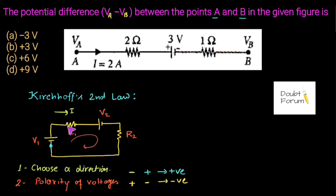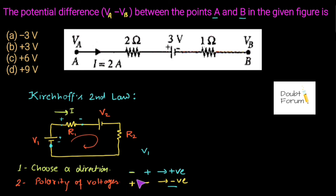Moving in the clockwise direction, we see the potential is increasing from the minus plate to the plus plate of the battery, so V1 is taken as positive. When we move further across R1, the current is entering from one point and leaving from the other, so this end is at higher potential and the other at lower potential. We are moving from higher to lower potential, so the voltage across R1 is negative.